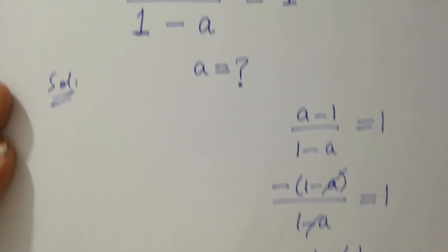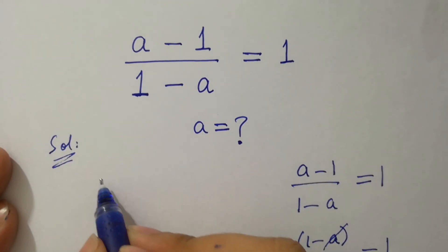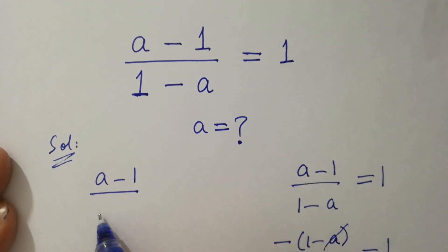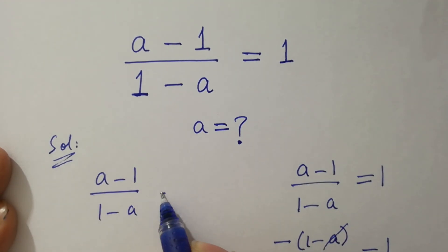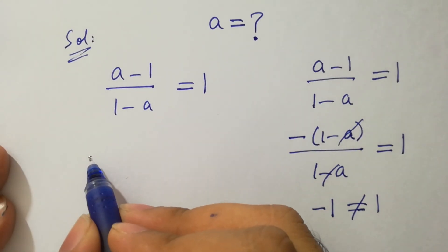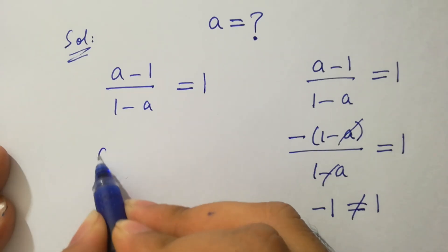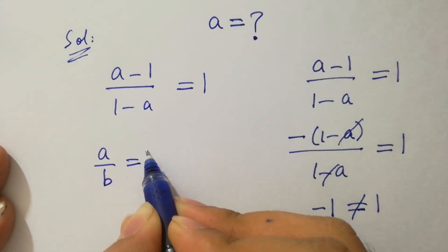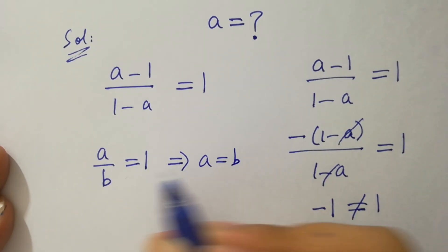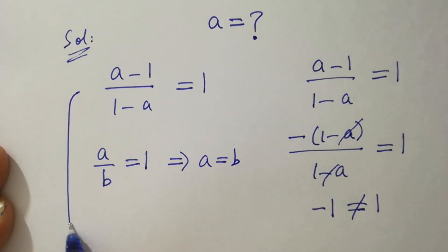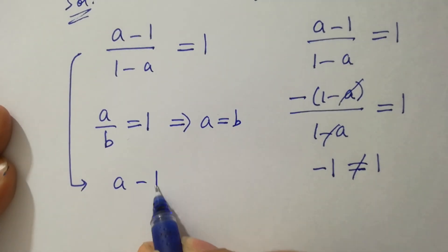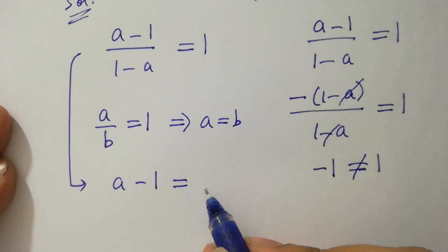Let's try another method to solve this problem. We have (a minus 1) over (1 minus a) equals 1. As we know, if a over b equals 1, then a equals b. So it will be a minus 1 equals 1 minus a.